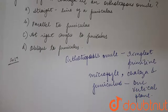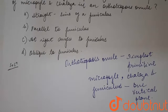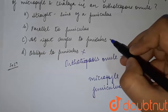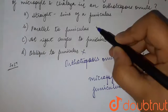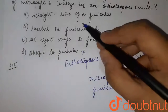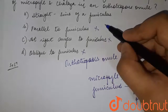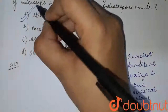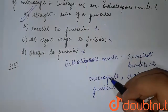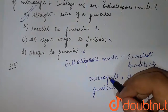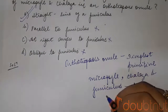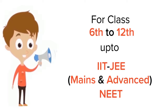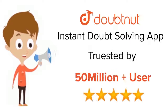Looking at the options given: oblique to funicular is wrong, right angles to funicular is wrong, parallel to funicular is also no. So the answer to your question is option A: straight line of a funicular. Thank you. For class 6 to 12th, IIT JEE, and NEET level, trusted by more than 5 crore students.